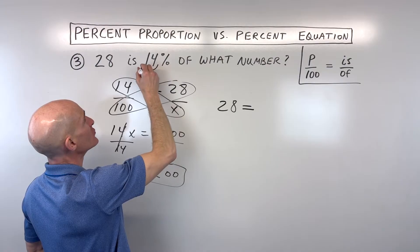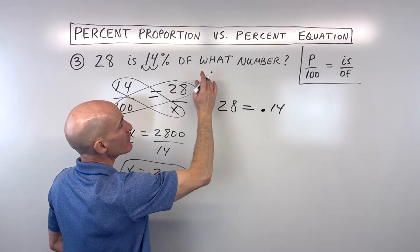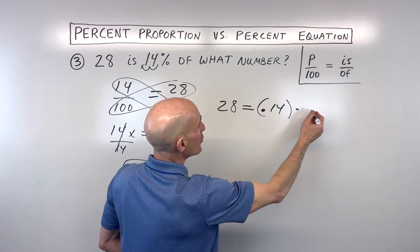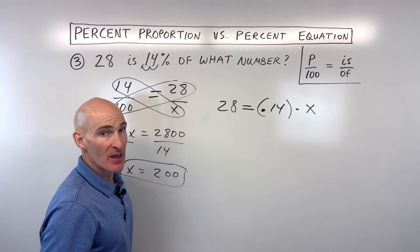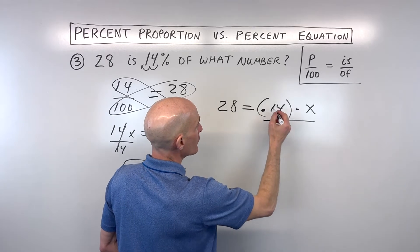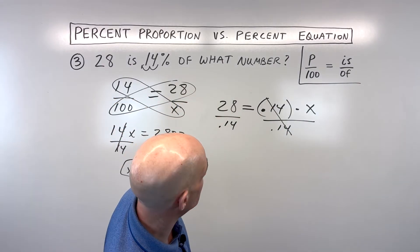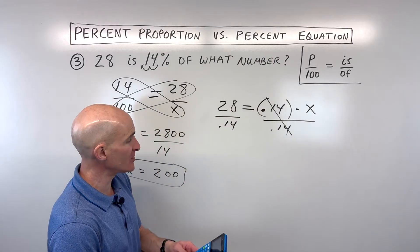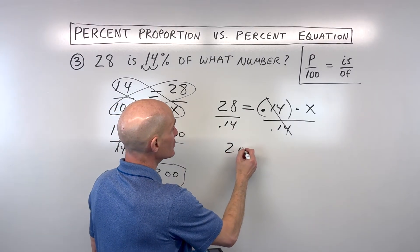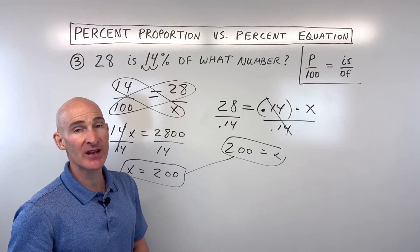'Of', remember that means times what number. 'What' means we don't know, so that's our variable x. Now if we divide both sides by 0.14, that's the opposite of multiplying by 0.14. Do it to both sides to keep it balanced. Let's go to the calculator. Remember the fraction bar means division. So 28 divided by 0.14 comes out to 200. So we're getting the exact same answer, just a different method, the percent equation.